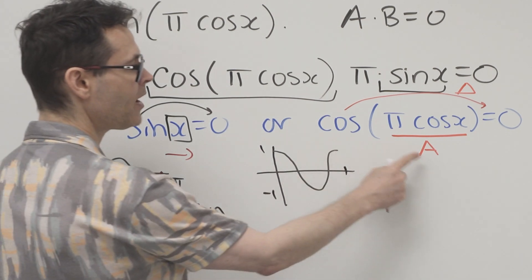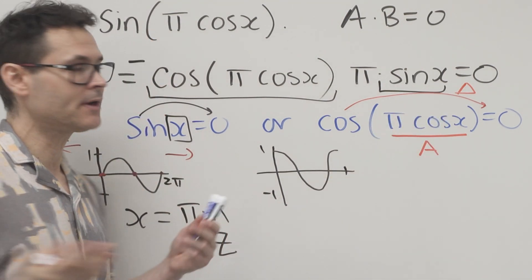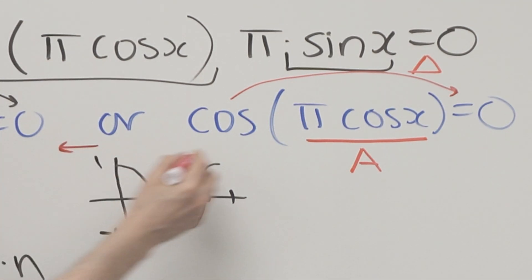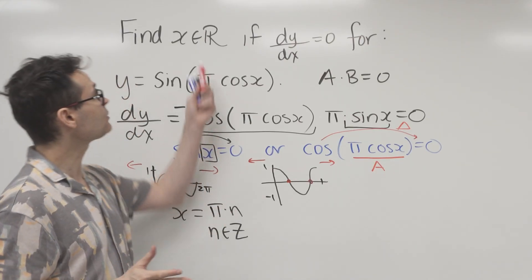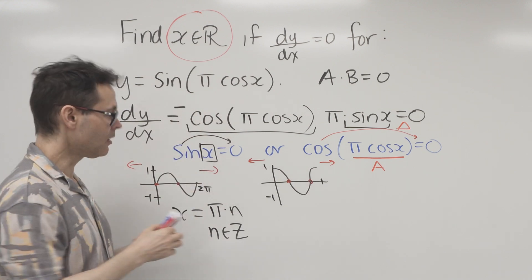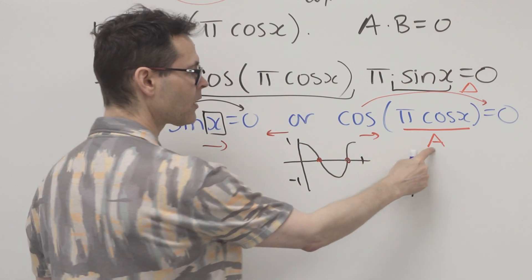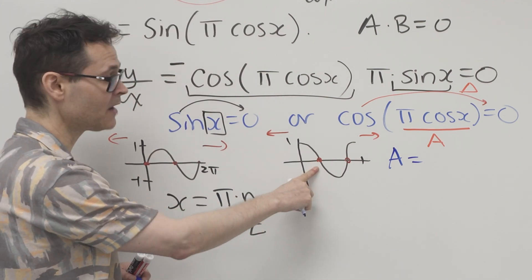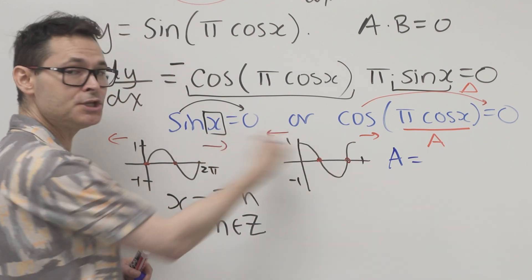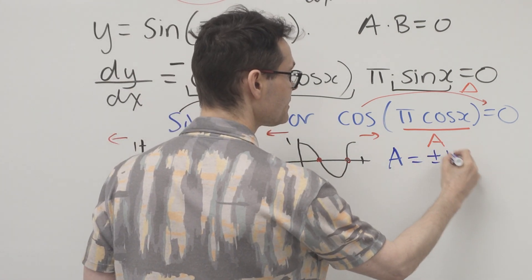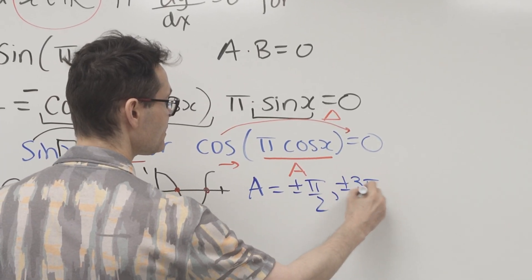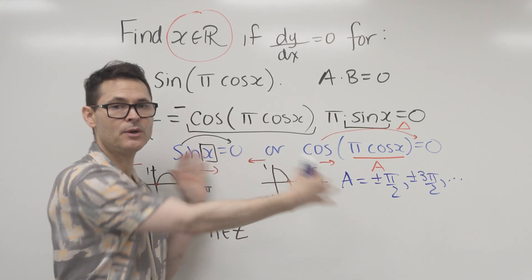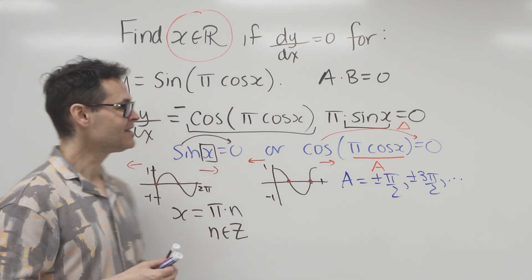For what angle — call it A — does cosine equal zero? It's zero at π/2 and 3π/2, but the graph goes in both directions forever. The general answer includes plus or minus π/2, plus or minus 3π/2, and so on — essentially all odd multiples of π/2. This is a non-calculator question.